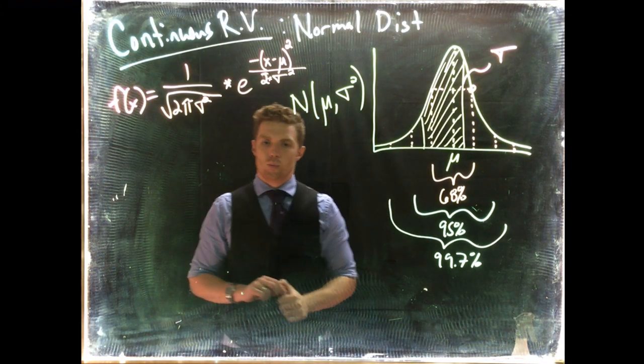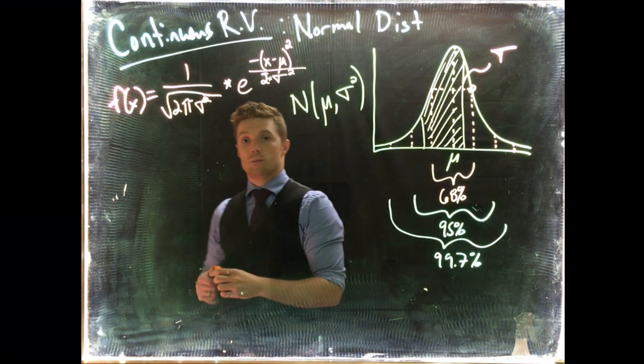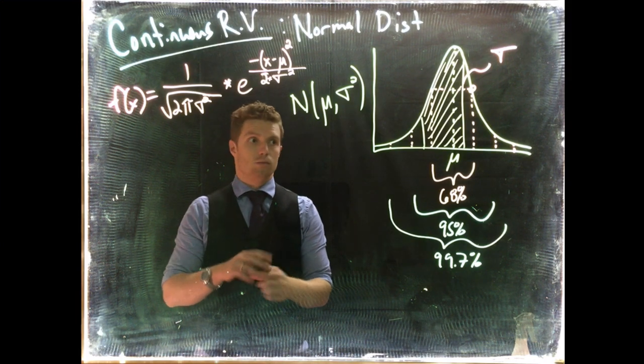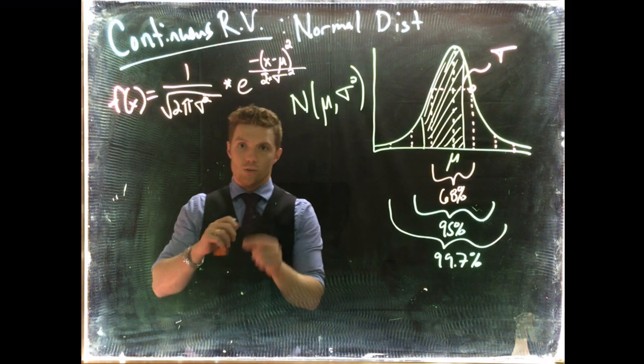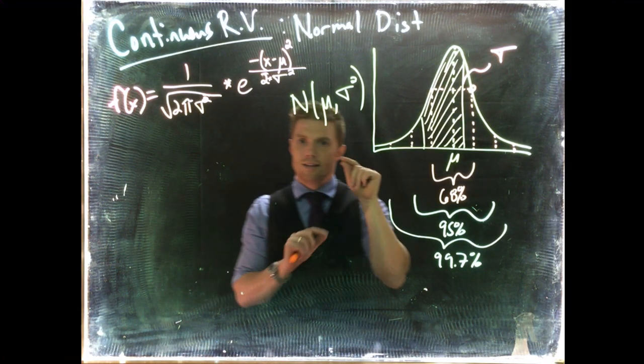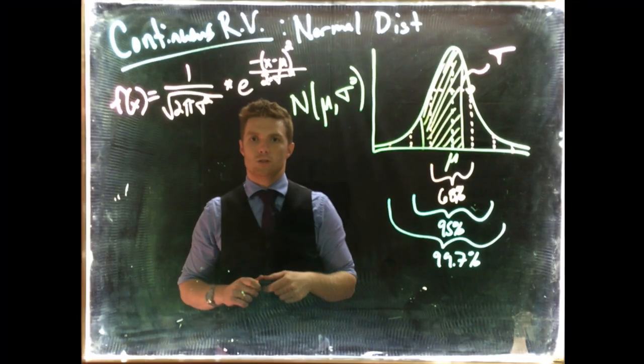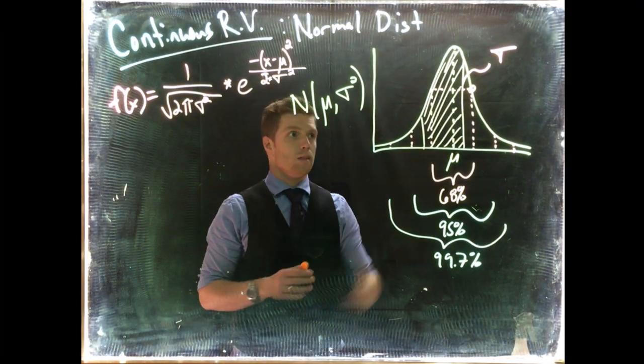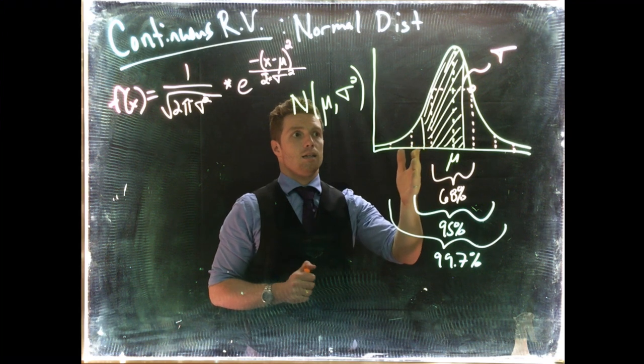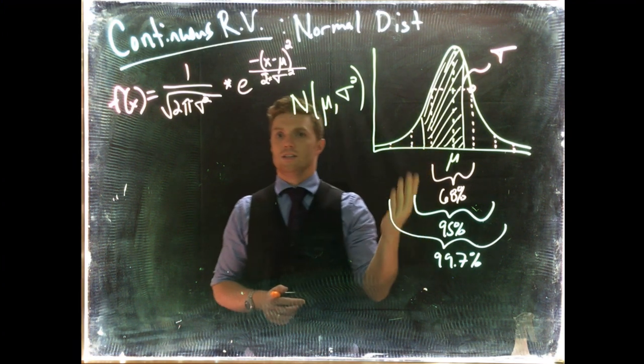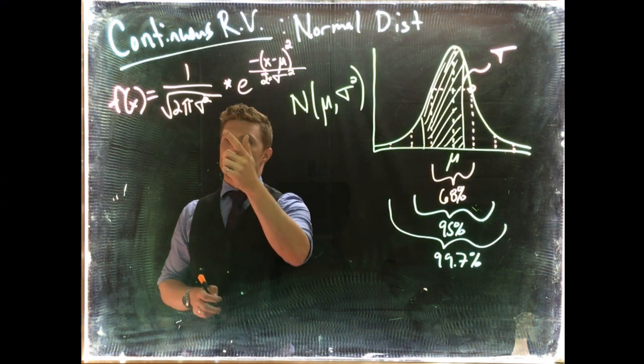When we did it with the uniform distribution you could just look at the area of the box. This one is much more complicated. In fact, even calculus has difficulties doing this as this is an equation that you can't even integrate, so you have to use approximation techniques.